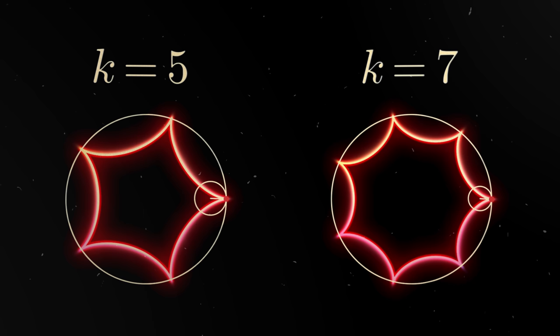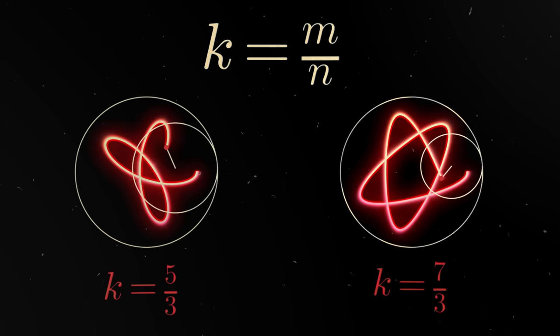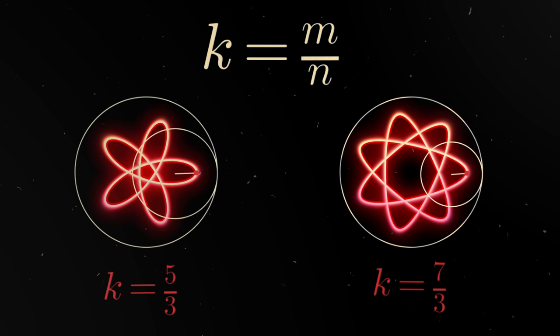If the number is rational, meaning it can be represented as a fraction m divided by n, then the image looks like a flower. And the numerator of the fraction determines the number of petals of this flower.